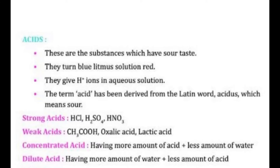What is a concentrated acid? If the acid has more amount of acid and less amount of water, then it is called concentrated acid. And if the acid has more amount of water and very less amount of acid, then it is called dilute acid. So in dilute acid the proportion of water is more, and in concentrated acid the proportion of acid is more.